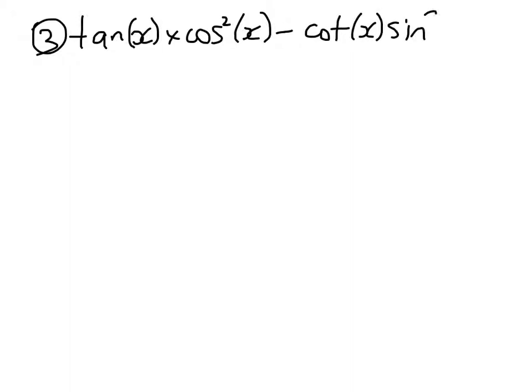Number 3. Remember I'm just doing the odd numbers. You can do the rest. Okay, tan(x) times cos squared(x), right, longer one, minus cot(x)sin squared(x). And we want to prove that that's equal to 0.